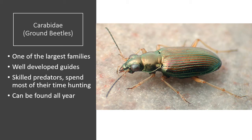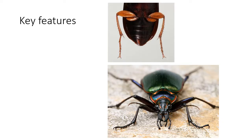The Carabidae, or ground beetles, are one of the largest families. They are a nice family to begin studying as there are many well-developed guides and keys. Ground beetles are skilled predators, often hunting other invertebrates both in the day and night, like the green tiger beetle. As the name suggests, ground beetles spend much of their time hunting on the ground, and only a small number of Carabidae can fly. Many species, both larvae and adult, feed on slugs and snails and other insects. Some also feed on carrion, and some species attack aphids. Ground beetles can be found all year round and many overwinter as adults, making them a nice group to begin studying as they are often easy to find.